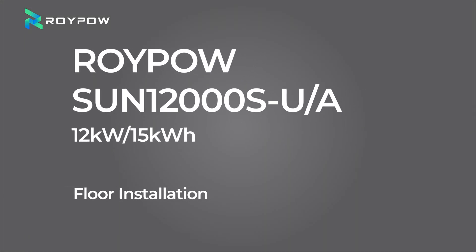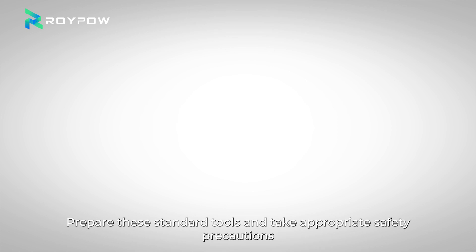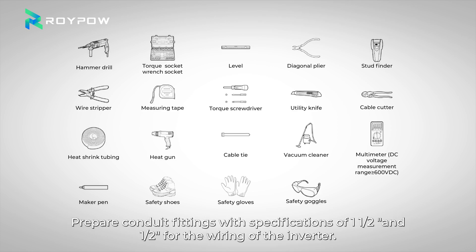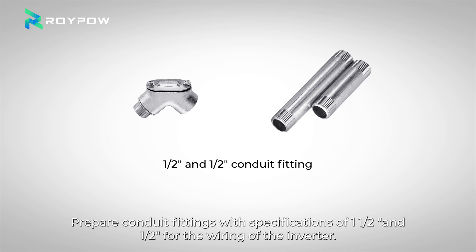The 12kW 15kWh System Floor Installation. Prepare these standard tools and take appropriate safety precautions. Prepare conduit fittings with specifications of 1 1/2 and 1 1/2 inch for the wiring of the inverter.